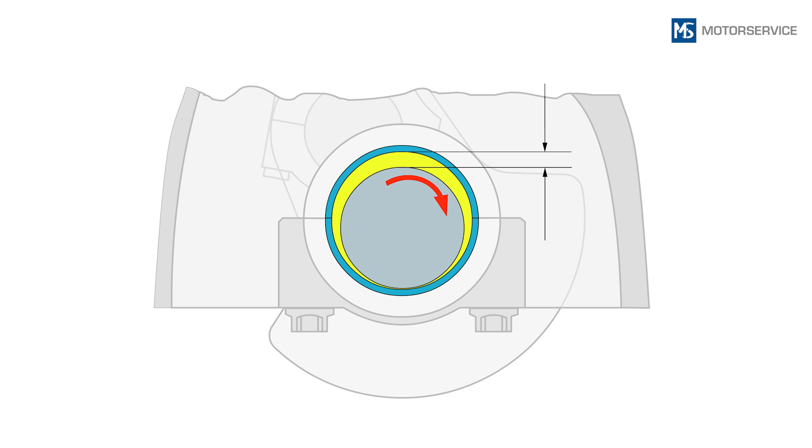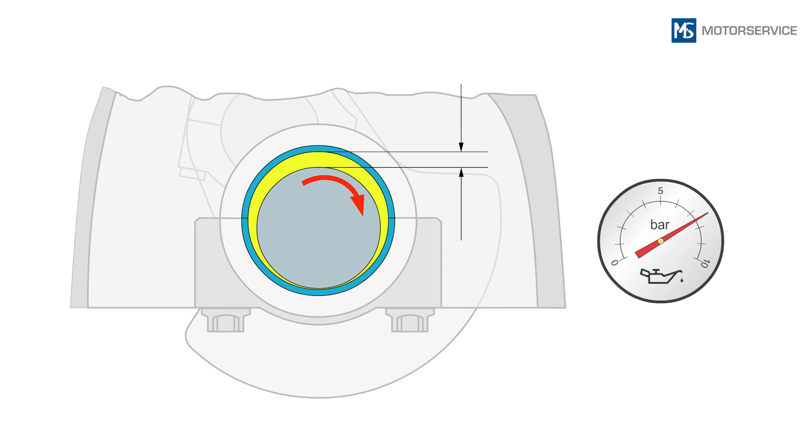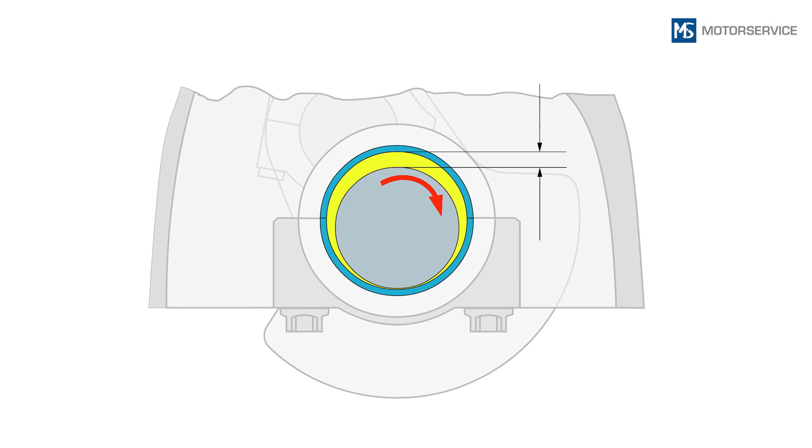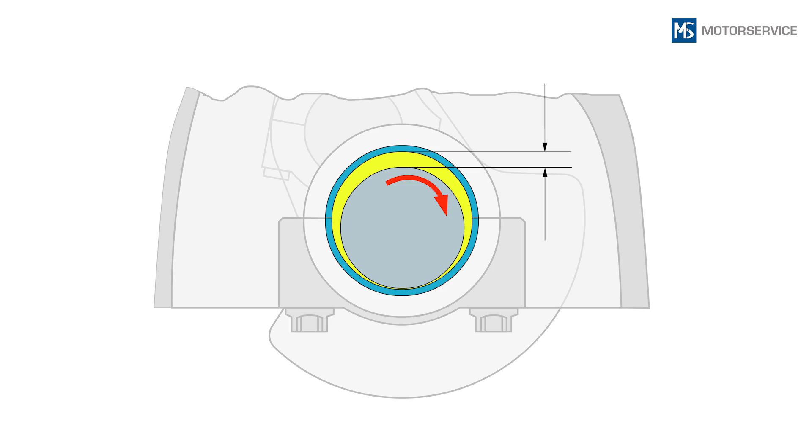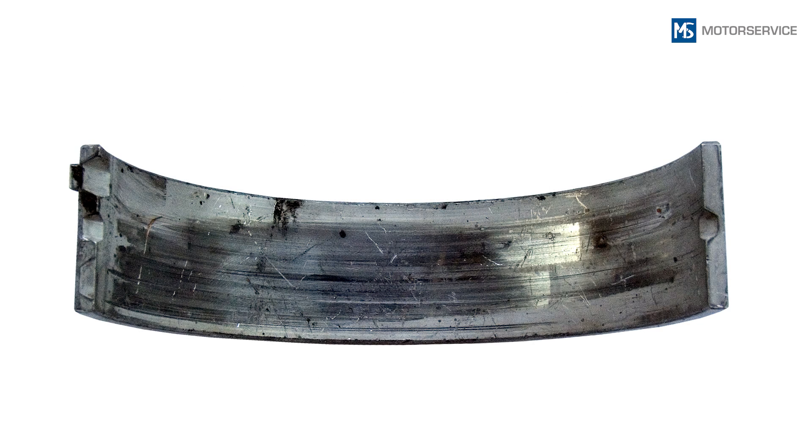Excessive bearing clearance results in a greater amount of oil passing through. If the delivery rate of the oil pump is no longer sufficient, the oil pressure is reduced and the oil supply to the engine is no longer guaranteed. This can lead to increased wear at the affected bearing positions and other bearing positions and at worst can result in fretting of the bearings.